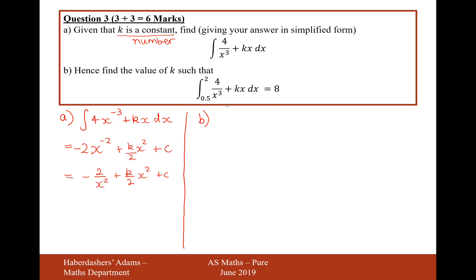Let's now move on to part b. Hence, find the value of k such that the integral between the boundaries of 2 to 0.5 of the same expression from above dx equals 8. So we need to find what k is.